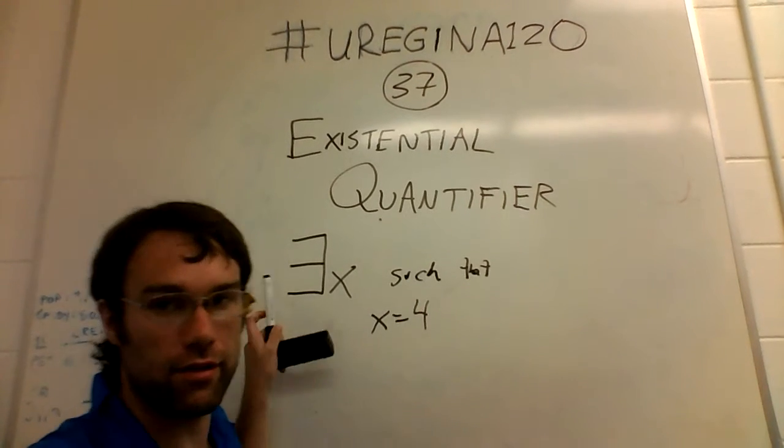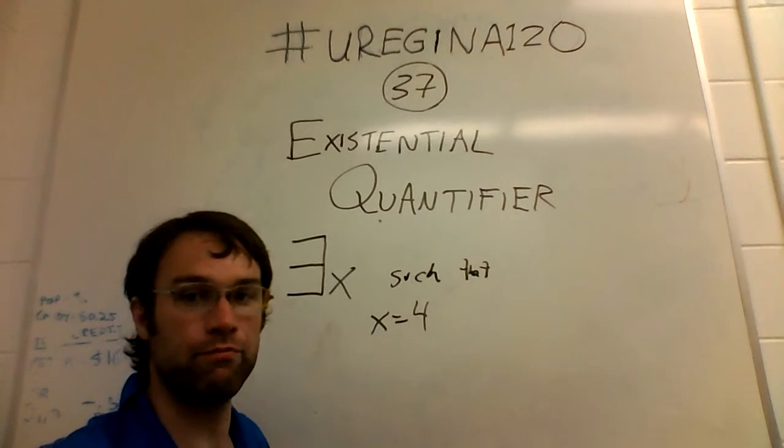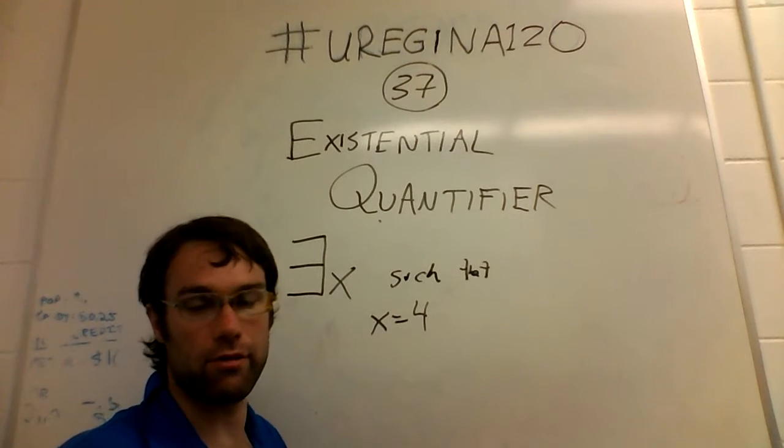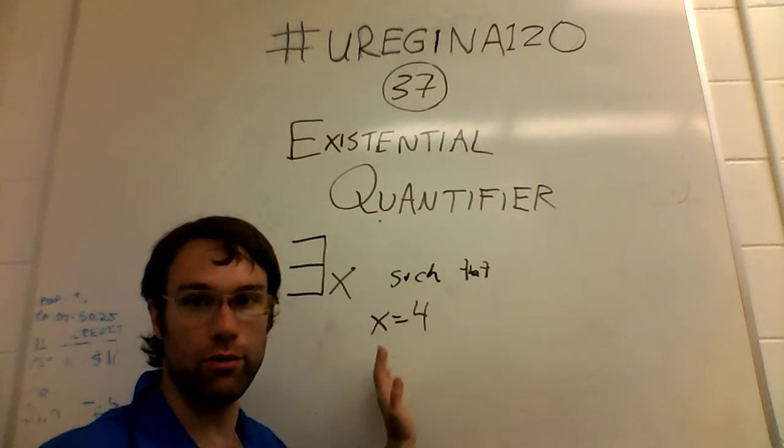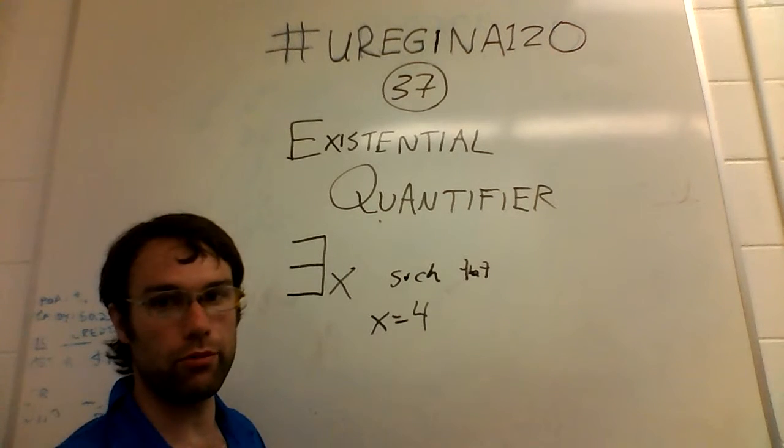You could have something like this, that there exists some X such that X is equal to 4, which is true for, you know, that there's a number X that it is equal to 4, which is 4. That's kind of trivial, but you can get more complicated ones too.